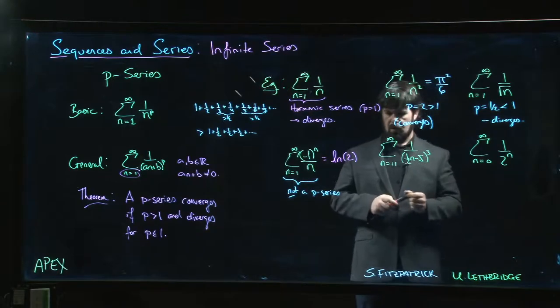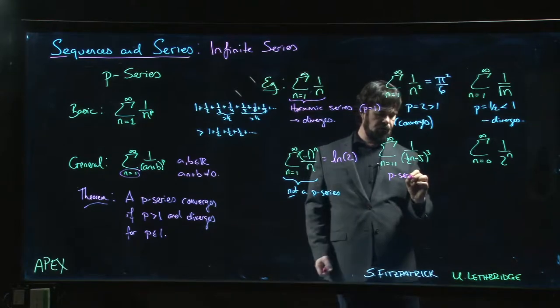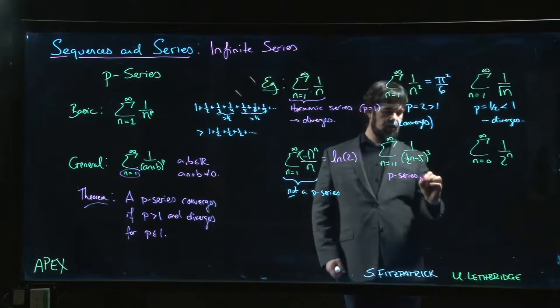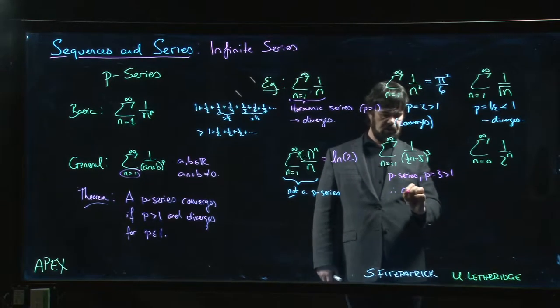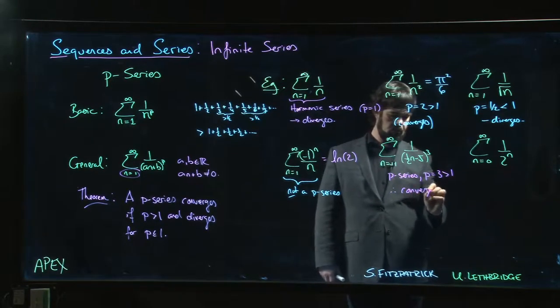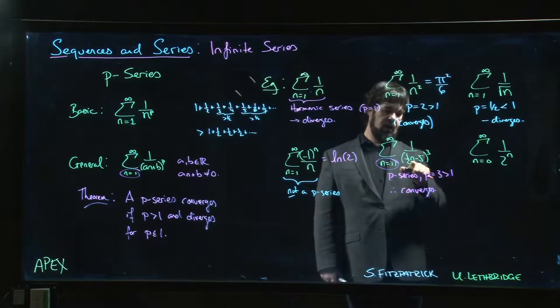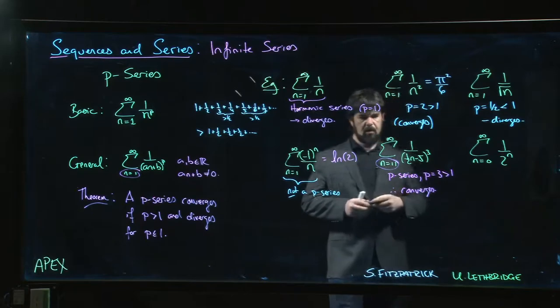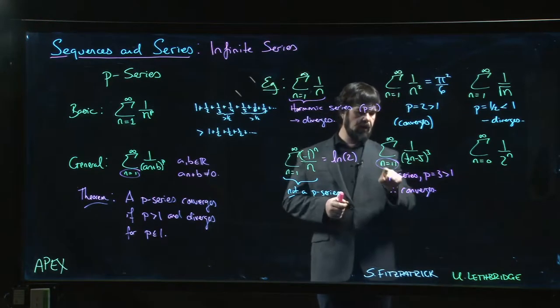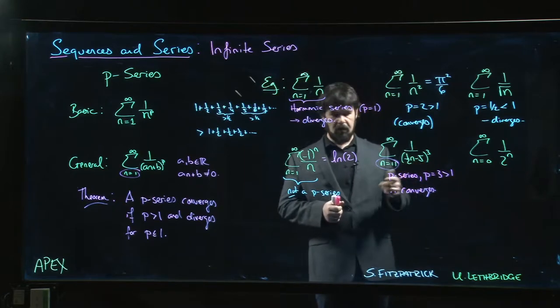This one here, well, this is a p-series. It's this general form of the p-series with p equal to 3, which is bigger than 1. And so that means that this one converges. Notice the starting value, 11. We can't do 10 because we get a 0 in the denominator. So we've got to make sure that we watch out for things like 0s in the denominators. Start the sum a little bit later on once you're past all the 0s, and then you can talk about convergence.